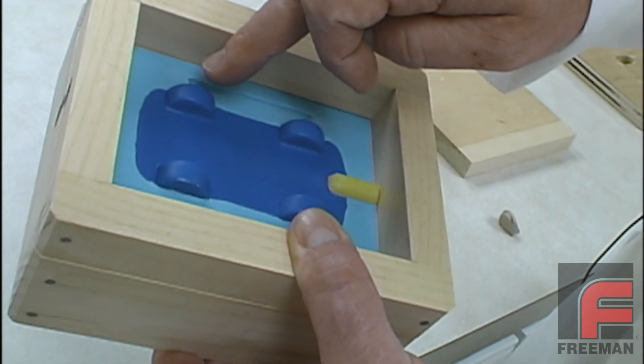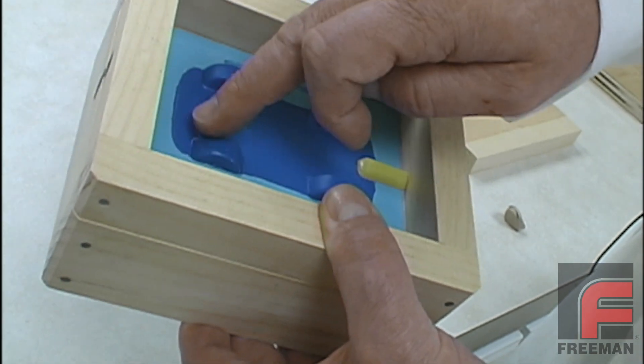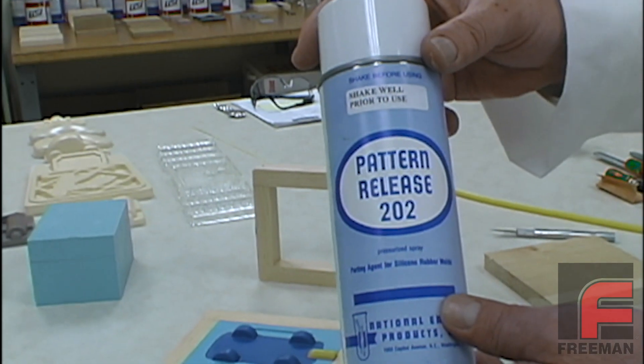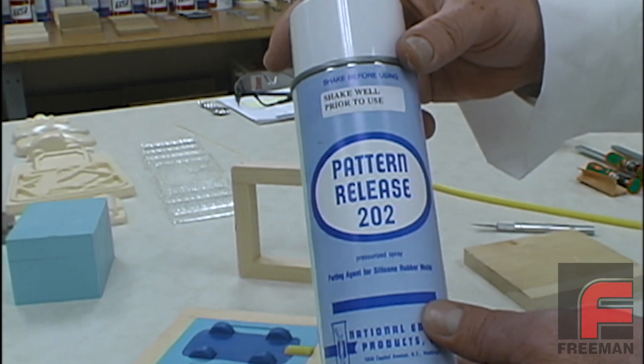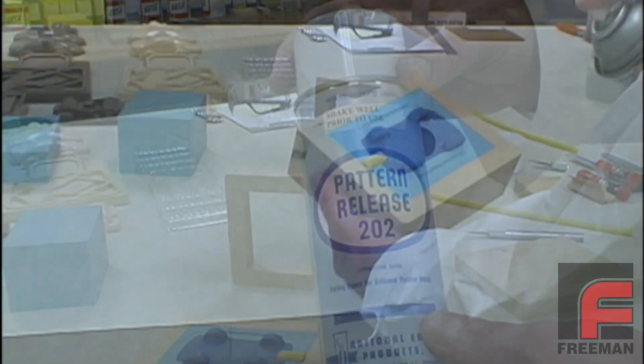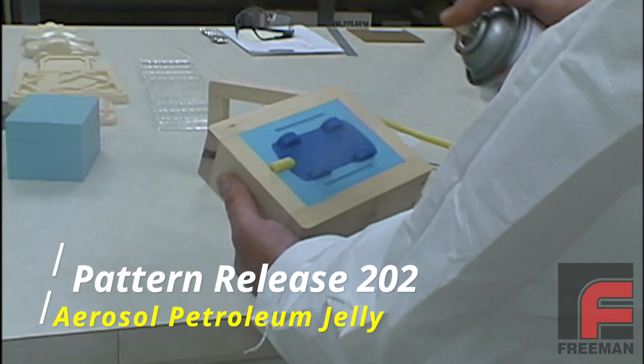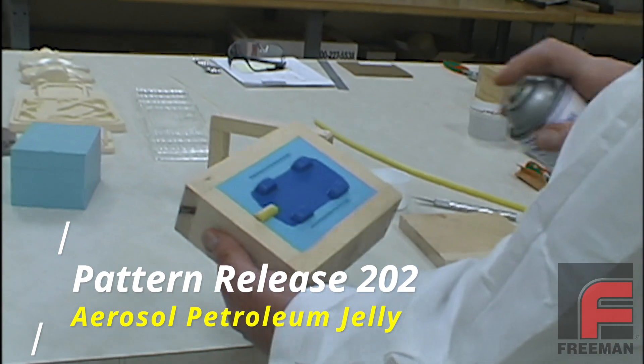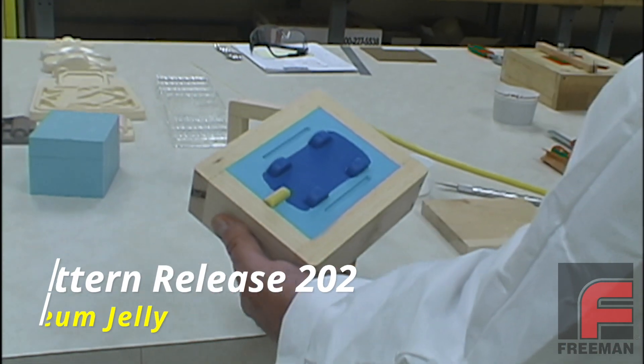Before we pour the second half of the mold, it is very important to apply a release agent to the first half. Silicone rubber doesn't stick very well to most materials, but it does stick very well to other silicone rubber. So we are applying Pattern Release 202, which is an aerosol form of Vaseline. A light, uniform coat will be enough to give us a clean release.